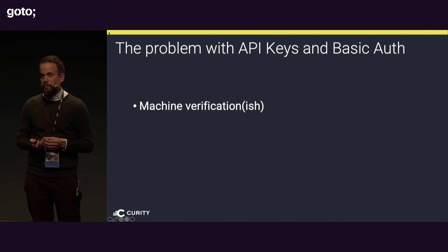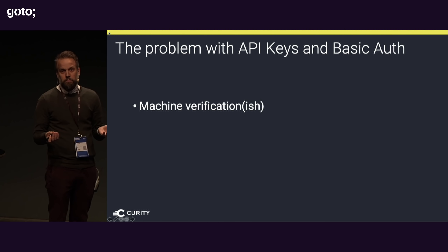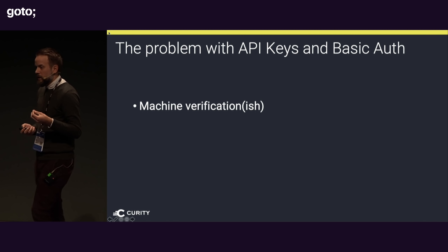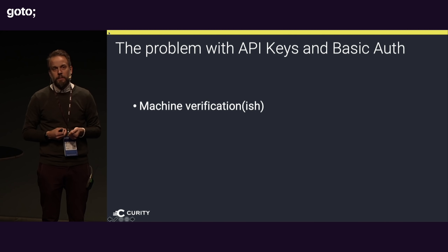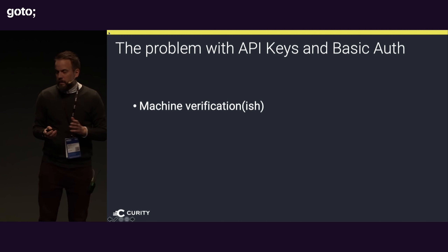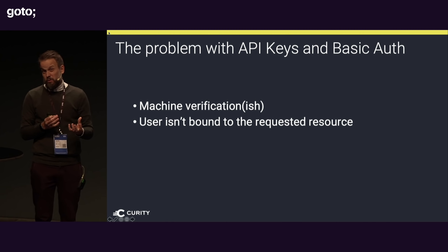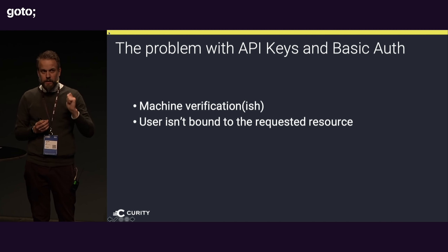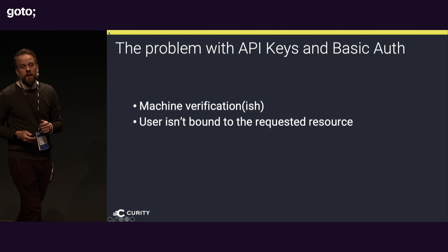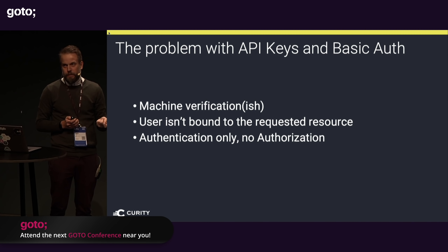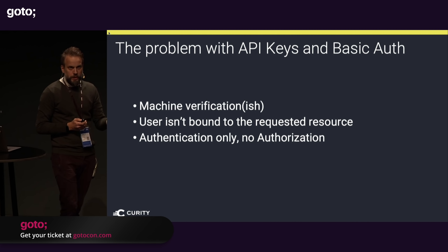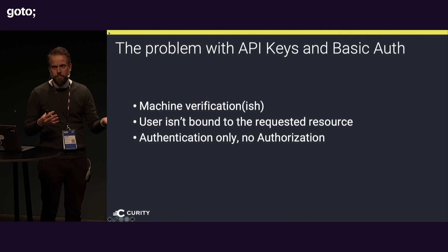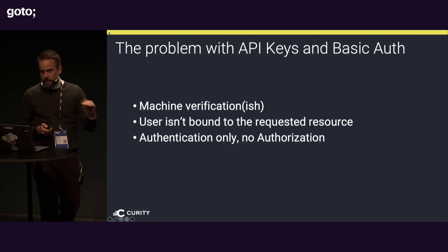What's the problem with level zero? First, it's machine-to-machine verification — we're not really authenticating or taking the user into account. The user isn't bound to the resource; the call just says 'yes, you can call me' and trusts that you'll do the right thing. Third, it's authentication only — we're not providing any means for the API to do authorization. Authorization answers the question 'what are you allowed to do?' whereas authentication answers 'who are you?' That has to be custom.